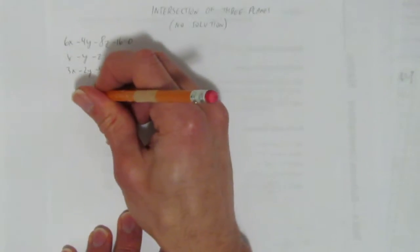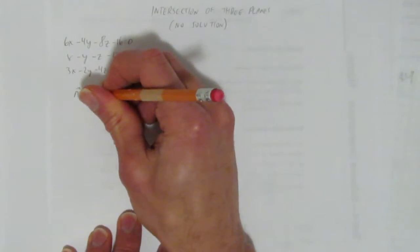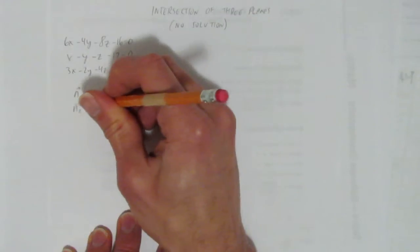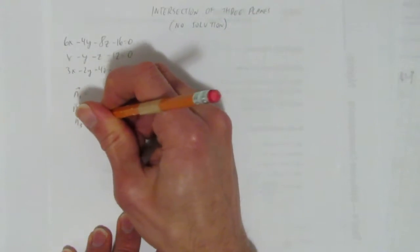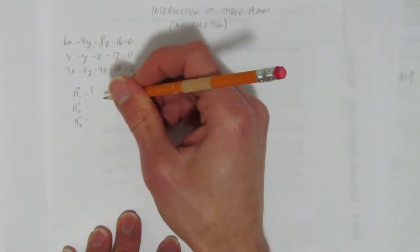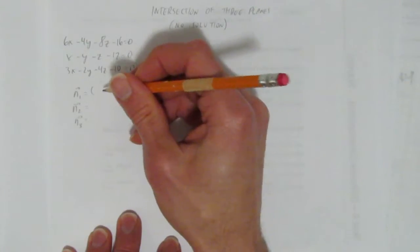So we start as normal. There's a reason why we always do these checks. We're checking, as normal, the normal vectors and seeing what they are. And what we're looking for is, are the normal vectors multiples of each other?